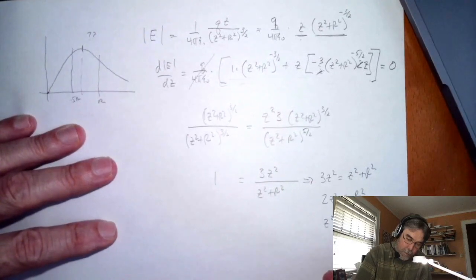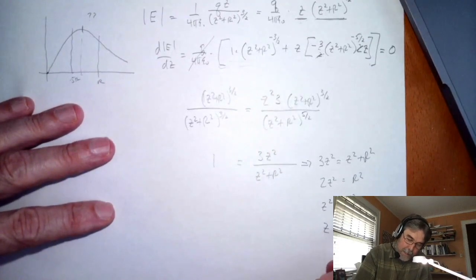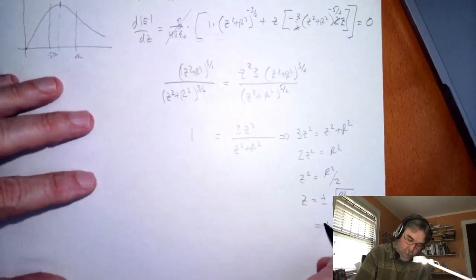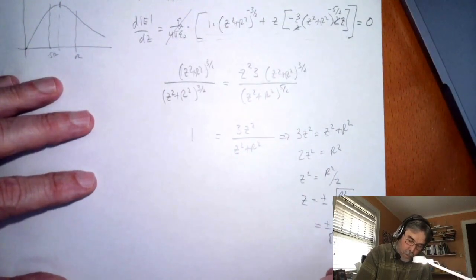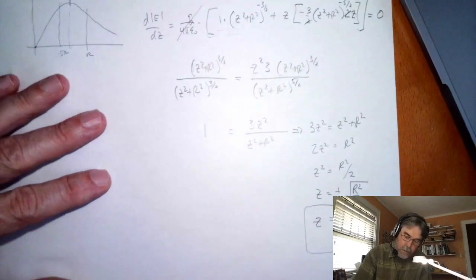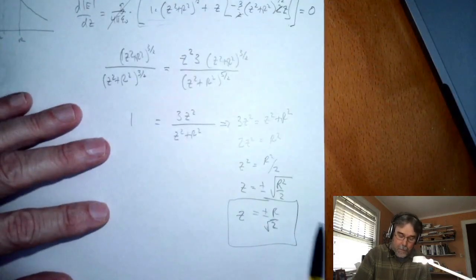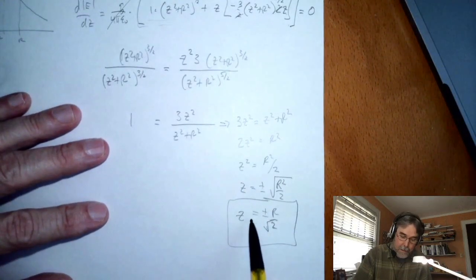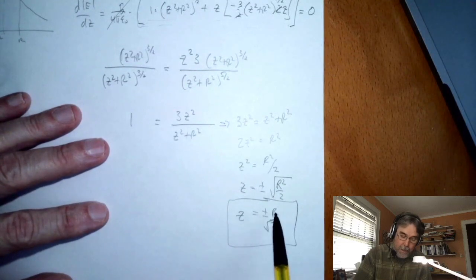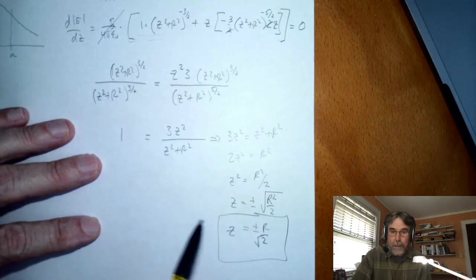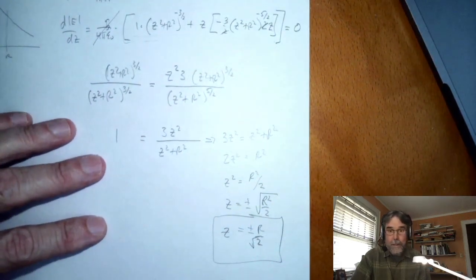Which means z is plus or minus the square root of r squared over 2 which of course is plus or minus r over the square root of 2. So the answer turns out to be z is plus or minus r divided by the square root of 2. I was running into my own video there and I didn't even see it, okay I hope you can see that now.